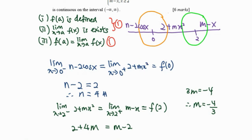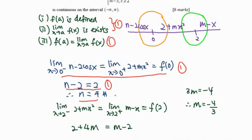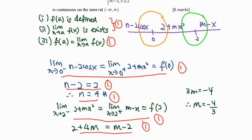For scoring these six marks: showing that the left-hand limit equals the right-hand limit equals the point value gives one mark; simplifying the limit to get n equals 4 is one mark; the answer n equals 4 is one mark. For the second part, setting up the limit as x approaches 2 is one mark; simplifying to get the equation is one mark; and the final answer m equals negative 4 over 3 is one mark.